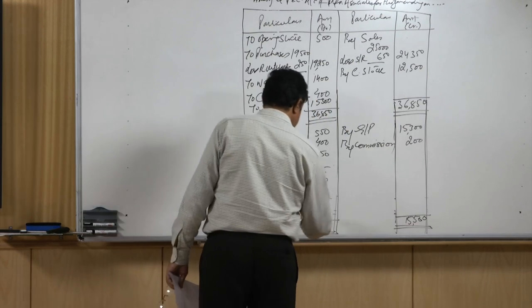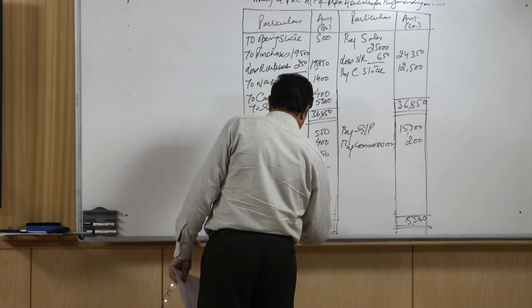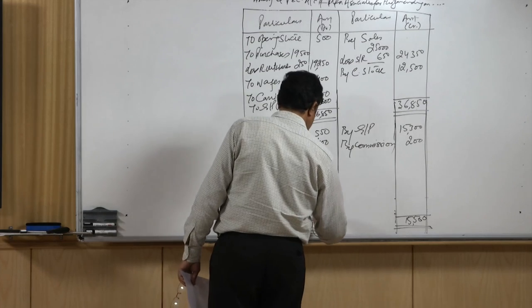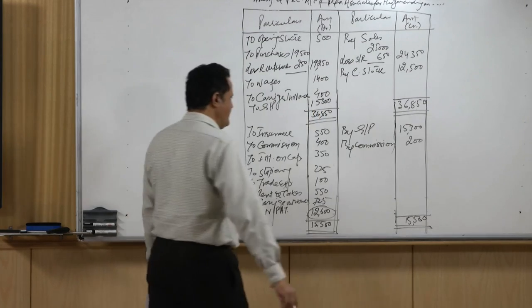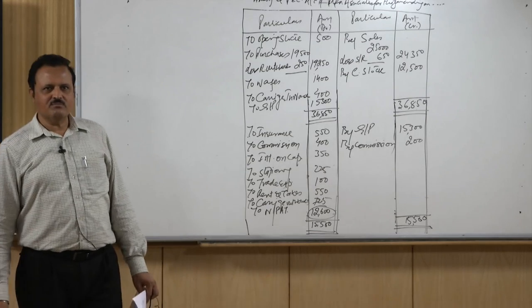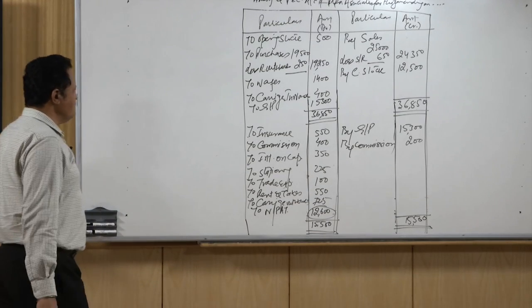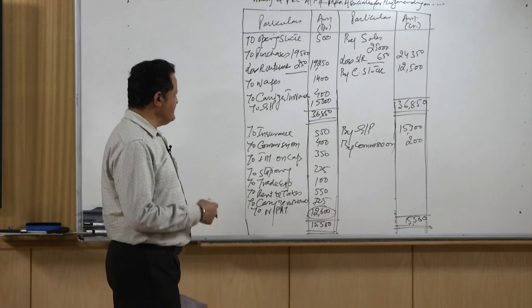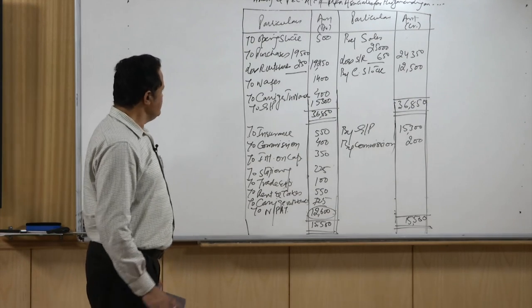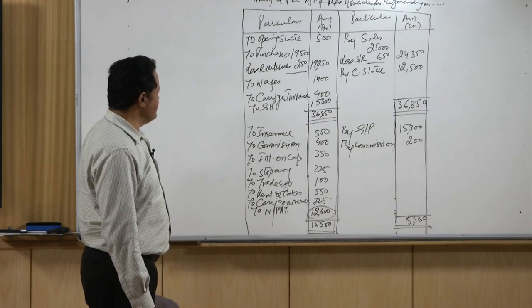The net profit — whether before tax or after tax if no tax applies — is 12,600 rupees, which is the final result of the business available to the owner. This is how we prepare the profit and loss account. We have now done two problems preparing the trading and profit and loss account.